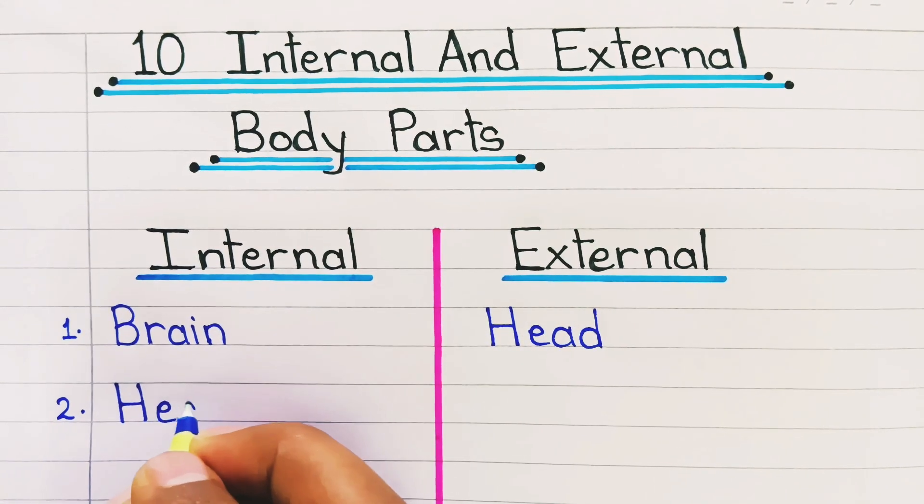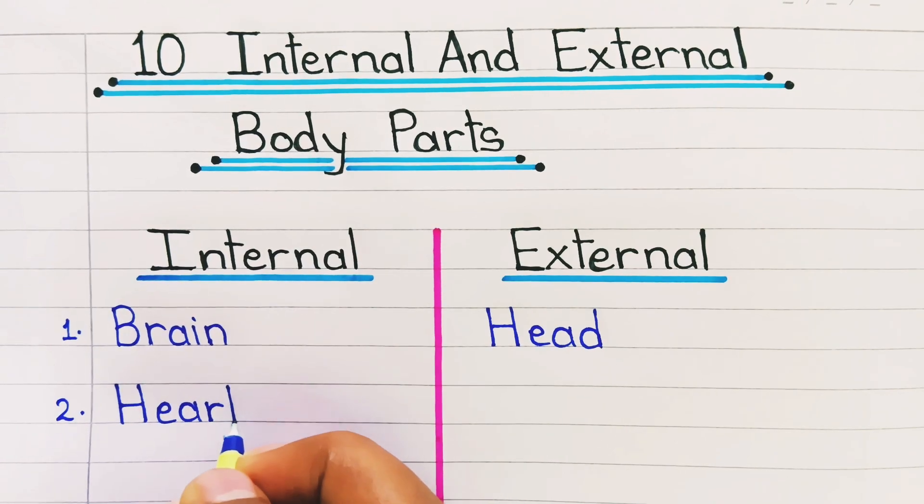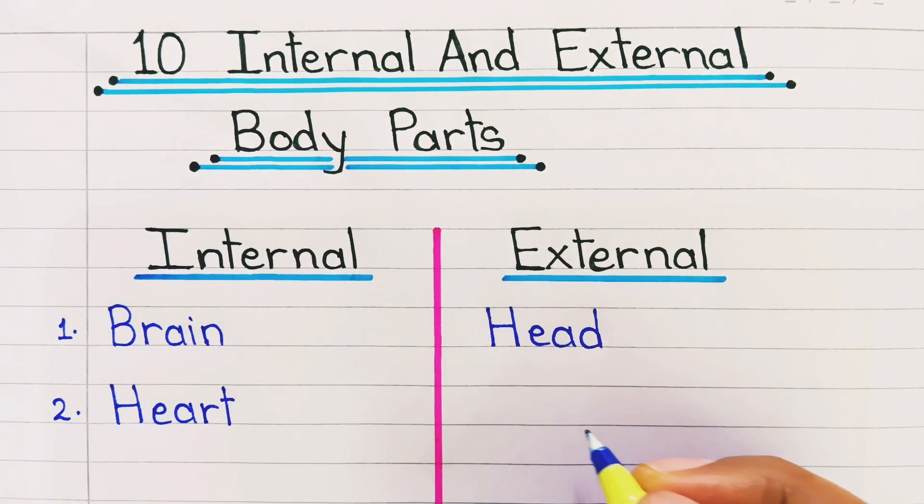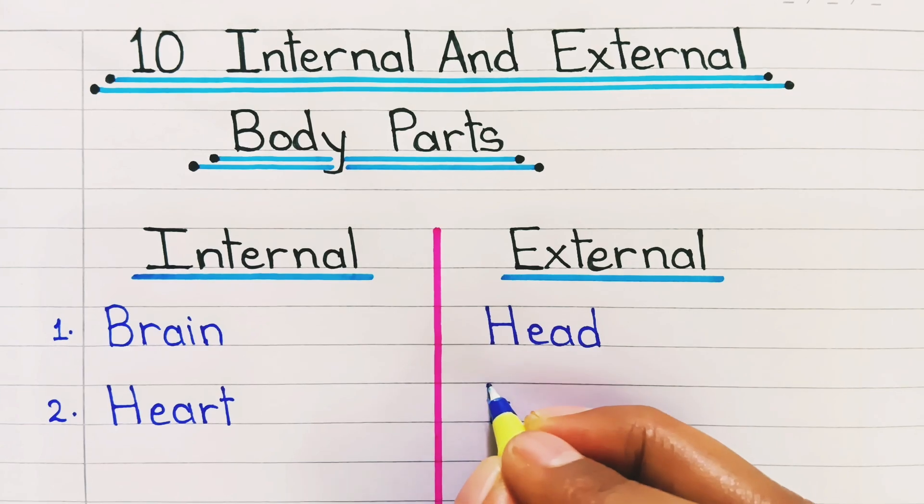2. Internal organ is heart. External organ is ear.